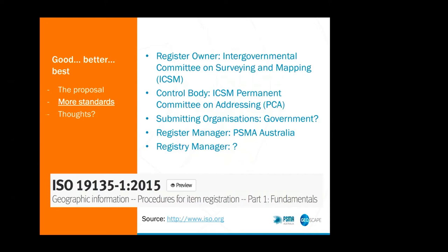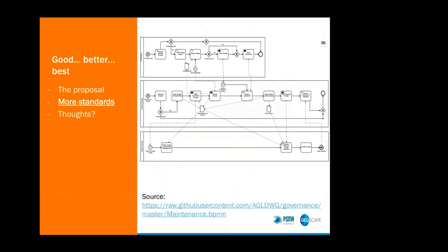At the moment, CSIRO — another thank you to CSIRO — are currently hosting the linked data product that we're working on, which currently contains those code lists. During the course of the linked data demonstrator, we identified how a business process for maintaining the code lists might work. We've proposed the business process to the nominated registry owner, which is ICSM, and delegated to the nominated control body, which is the permanent committee on addressing. We're currently waiting for the decision to be documented in the permanent committee on addressing's minutes. I think they need to accept that responsibility as part of that process as well — I don't believe they've met since we asked them to accept their responsibility in this governance process.